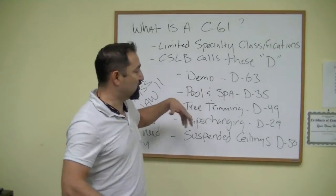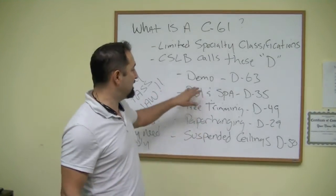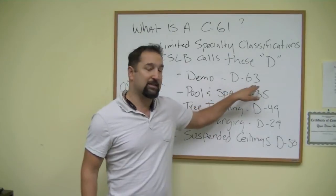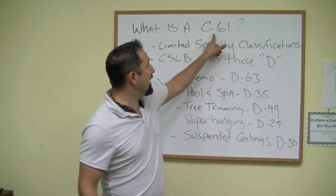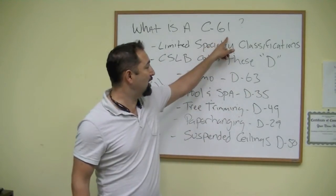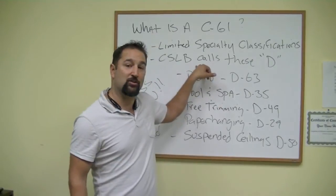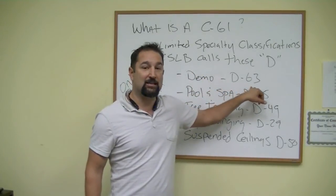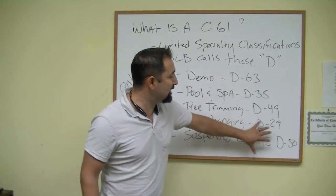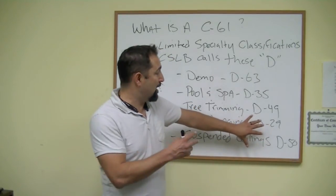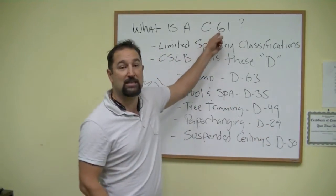For example, look at demo. It's really construction cleanup and demo, but demo would be a D63. In other words, you would end up getting a C61, but the CSLB or the Contractor State Licensing Board, they're going to recognize that as a D63. All of these D license contracting businesses would fall under the C61.